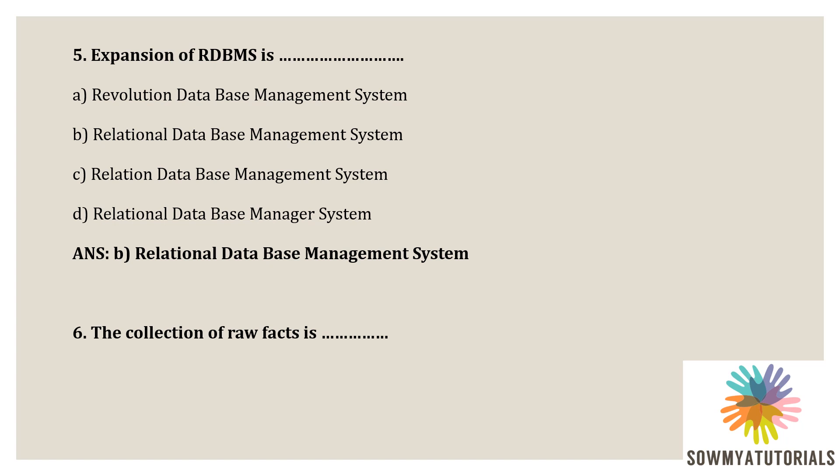The next question: the collection of raw facts is what? Options are A) data, B) information, C) processed data, D) database. The correct answer is A — data. The collection of raw facts is called data, which requires processing. This is the definition of data.